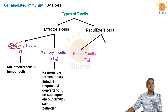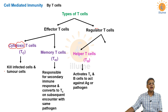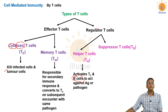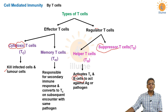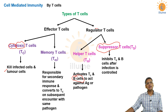Regulator T cells are of two types: helper T cells (TH) and suppressor T cells. Helper T cells activate immunity — they activate both TC (cytotoxic T cells) and B cells. When TC is activated it kills infected cells and tumor cells; when B cells are activated they form antibodies for antibody mediated immunity. Suppressor T cells suppress immunity by inhibiting both TC and B cells.